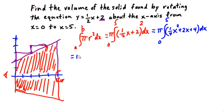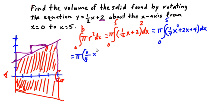Integrating, we're going to have pi times: one-fourth x squared raises to x cubed, and we divide by three — so the denominator is four times three, giving one-twelfth x cubed. Plus two x integrates to two x squared over two, so that two over two cancels, giving plus x squared. Plus four x. Evaluated from zero to five.